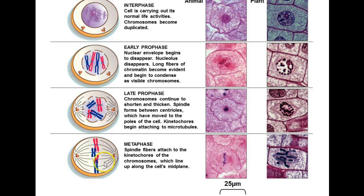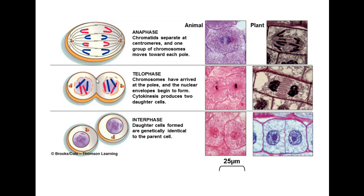During anaphase, the centromeres — that's the dense area that holds two chromosomes together — have split, and the two sister chromatids are being pulled away from each other. You notice this V-shape: the chromosome is being pulled along by the centromere, and the arms of the chromosome are just dragging along behind it. That's why you get that V-shape.